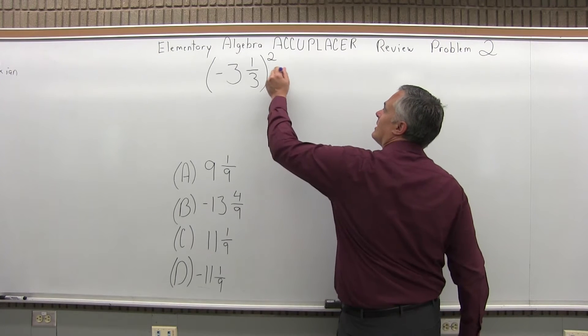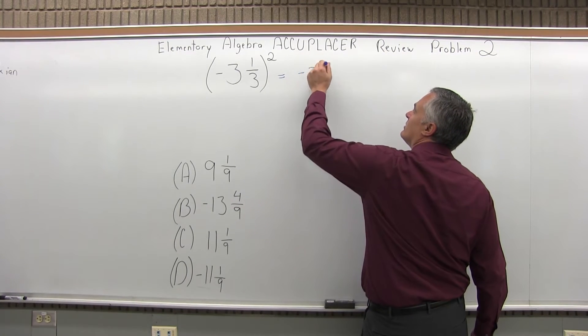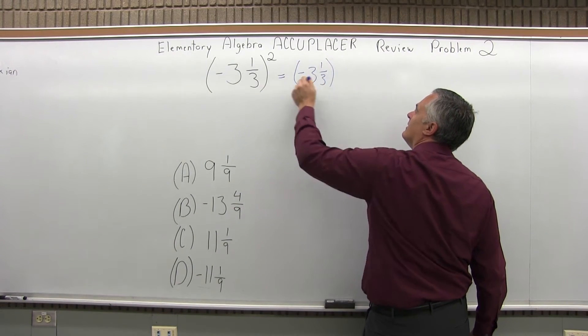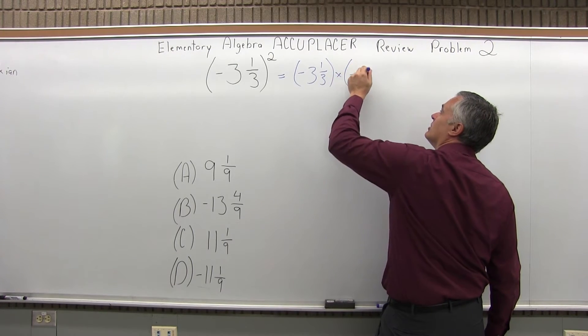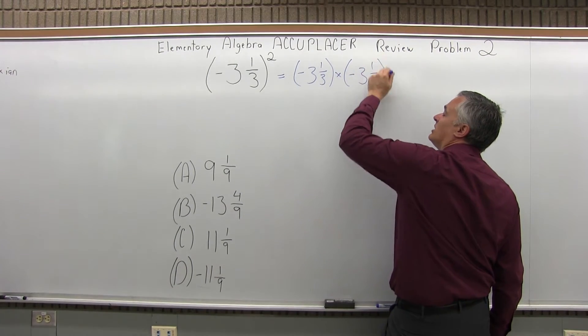So, what that is, is negative 3 and a third times negative 3 and a third. We have to multiply this out.